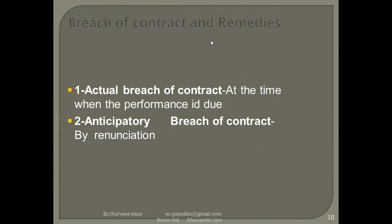Breach of contract and its remedies: when there is a breach of contract, it may be an actual breach of contract — at the time when performance is due — or an anticipatory breach of contract — by renunciation of the contract before the performance date. These are the two types of breach of contract.